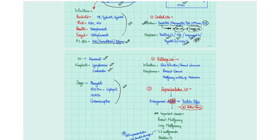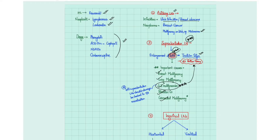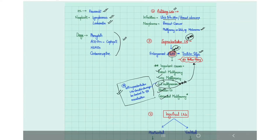Axillary lymph node enlargement can occur due to local limb infection, breast sepsis, breast cancer, or limb malignancy such as melanoma. The supraclavicular lymph node is very important — enlargement on the left side is known as Troisier's sign and can occur due to breast, lung, GI, bladder, or gonadal malignancy. GI malignancy is especially important, as tumor cells reflux from the thoracic duct into the duct supplying the supraclavicular lymph node, making it an essential part of any abdominal examination.